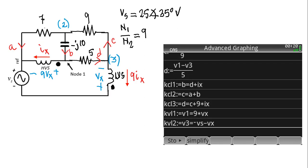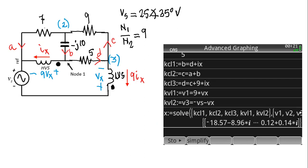Now we write the equations. How many unknowns do we have? We have V1, V2, V3, and also two more unknowns from the transformer: VX and IX — five unknowns total, so I need five equations. Treating the coils as voltage sources: the KVL equation for the primary gives V1 = 9VX, and KVL for the secondary gives V3 = negative of the voltage source minus VX. Five equations, five unknowns — we solve them for V1, V2, V3, VX, and IX.